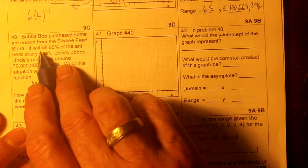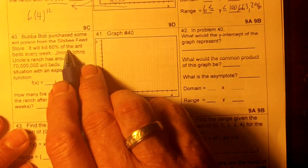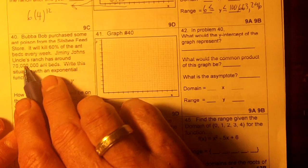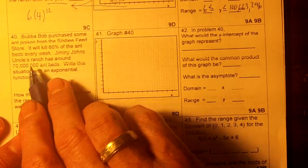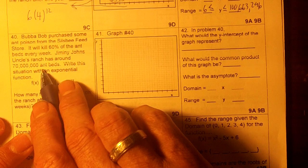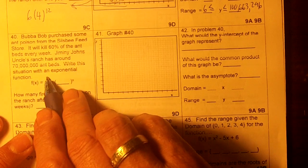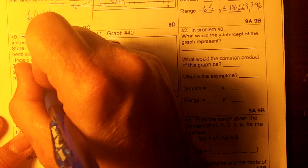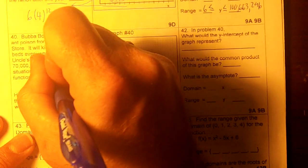Purchase some ant poison from the Sealsby Feed Store. It will kill 60% of the fire ant beds each week. Jimmy John's Uncle Ranch has about 70 million fire ant beds. Write this situation with an exponential function. So we're going to put 70 million right here. That's our starting number.